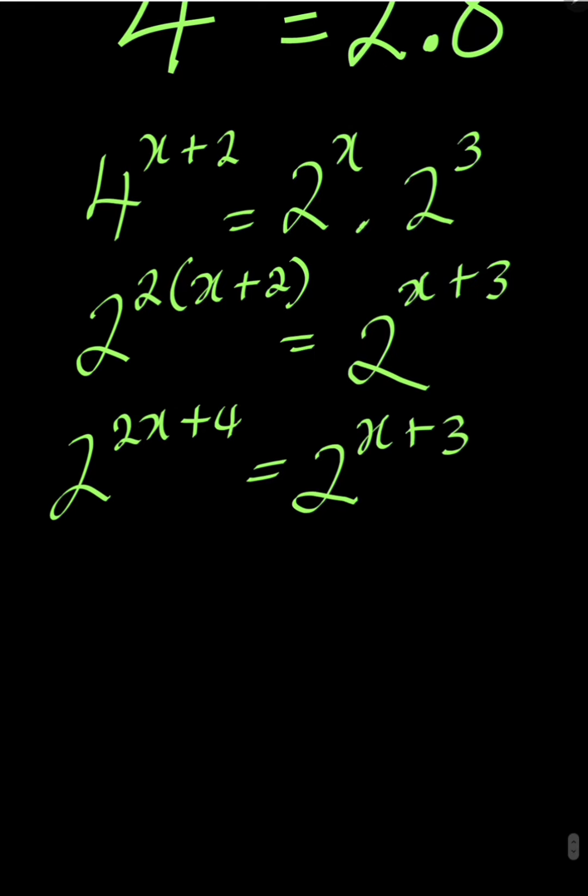When the bases are the same again, automatically the powers should be the same. Therefore we equate the powers. 2x plus 4 is equal to x plus 3.